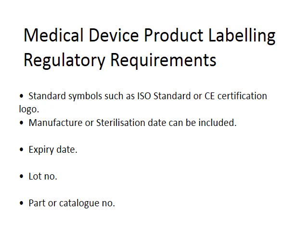General labeling requirements also include standard symbols such as ISO standard or CE certification, which must be present if the product is being sold on the EU market — the CE mark has to be on the device. The manufacture or sterilization date can be included and often is, as well as an expiry date, and a lot number, part number, or catalog number must be there.